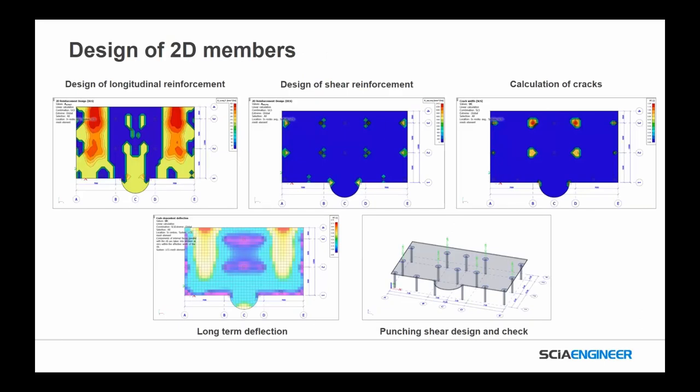Moving on to 2D members — there's a myriad of ways to do things. We're looking at different design outputs: whether it's the design of longitudinal reinforcement, shear reinforcement, the calculation of cracks that are going to develop, the new long-term deflection checks, or the new punching shear design and checks — all of these are now available in the new interface in C Engineer.